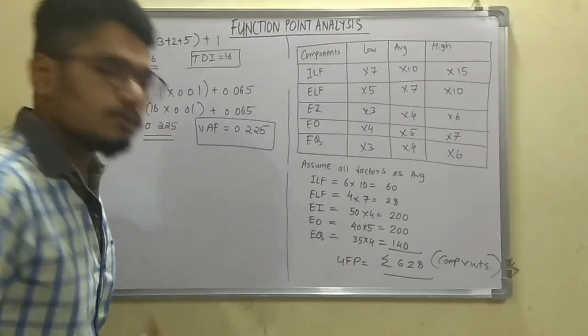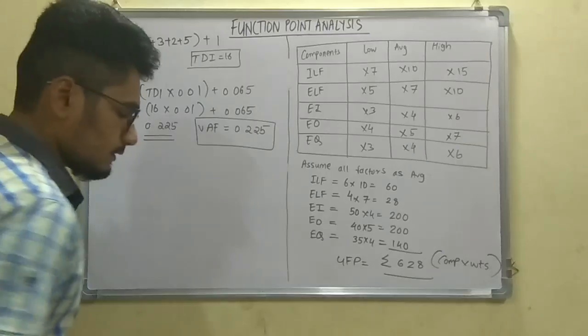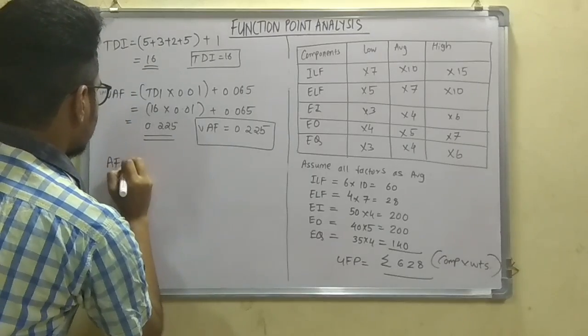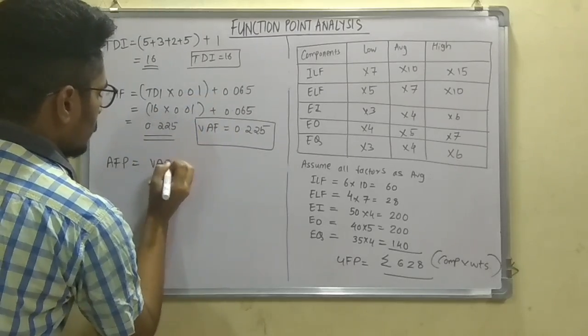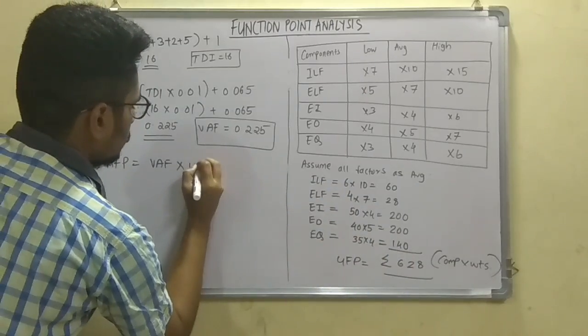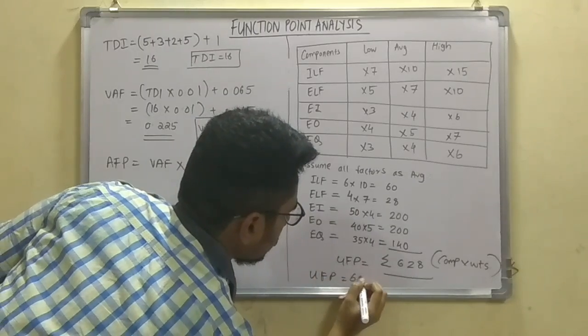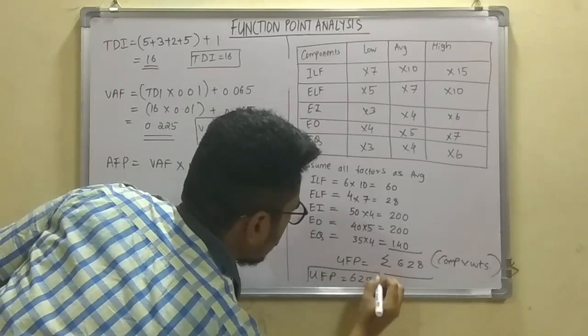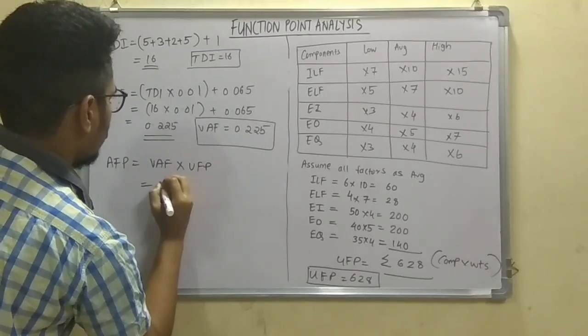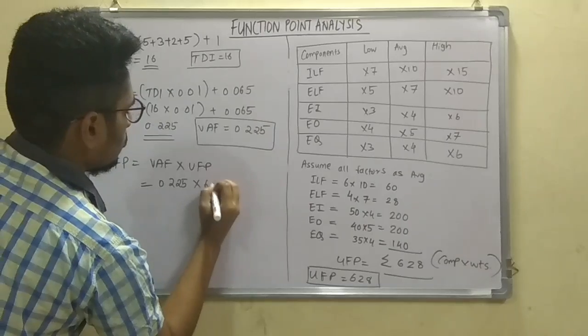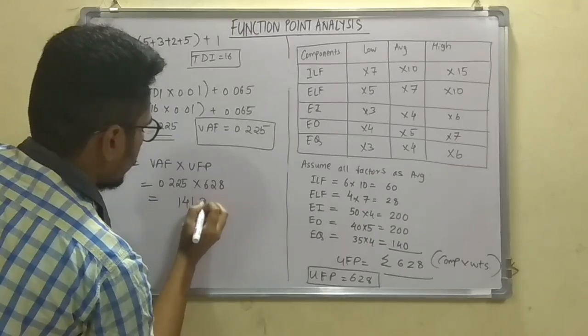And next, the final step is to calculate the AFP, which is our motto for solving this, that is the adjusted function point. This value is VAF multiplied by UFP. So this is UFP, this is 628, multiplied by 0.225. So the value comes out to be 141.3.